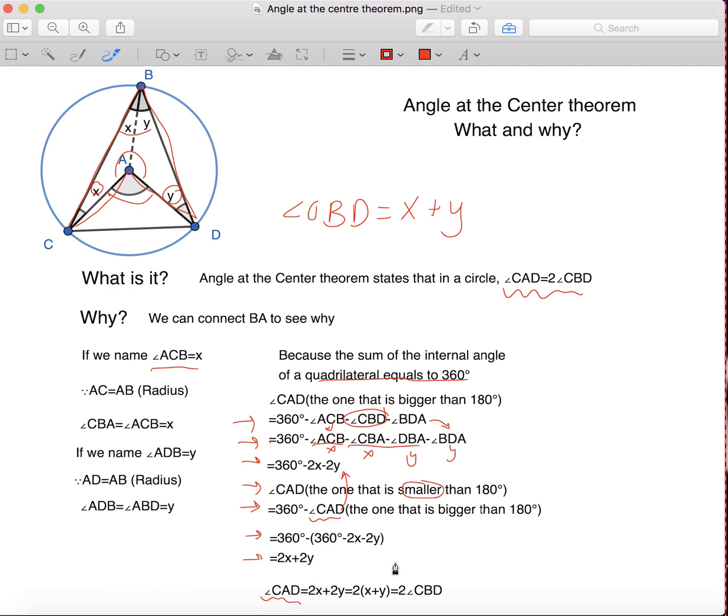And we also know that angle CAD equals to 2X plus 2Y. And we can easily see that X plus Y times 2 equals to 2X plus 2Y, which equals to 2 angle CBD.